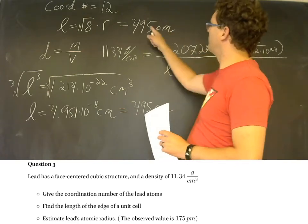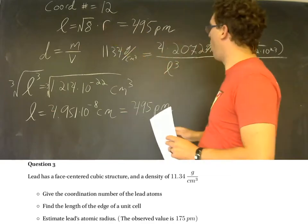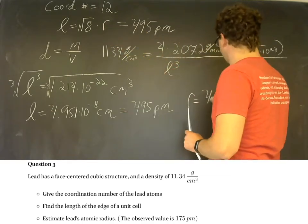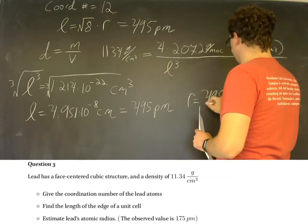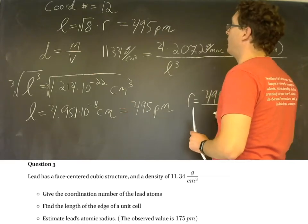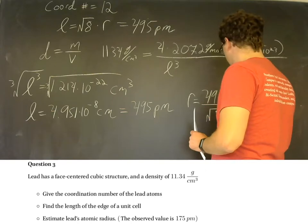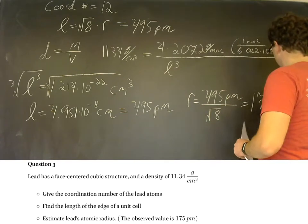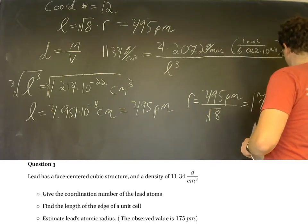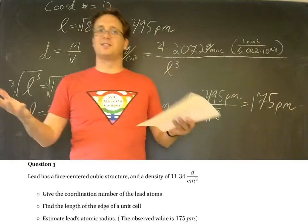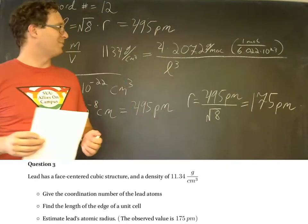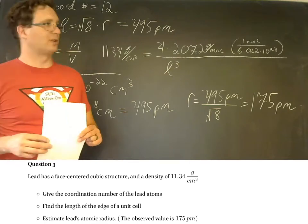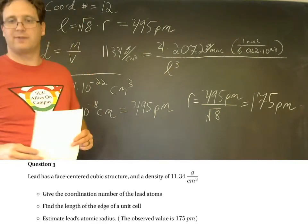And we can use this relationship now to solve for r. r is going to equal 495 picometers divided by the square root of 8. And this gives us 175 picometers. And this time it is consistent with the observed atomic radius that you can look up in tables. So 175 picometers.